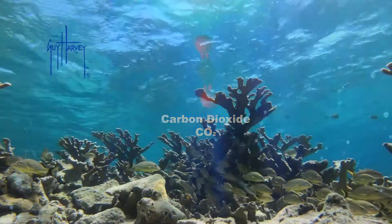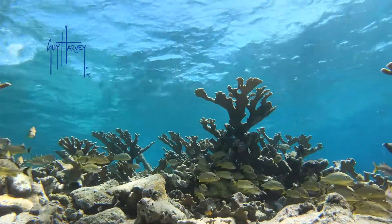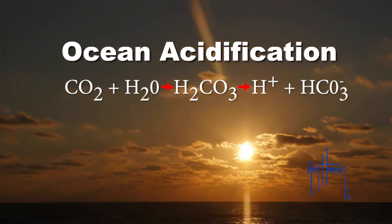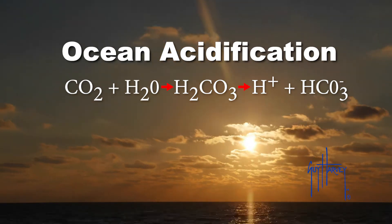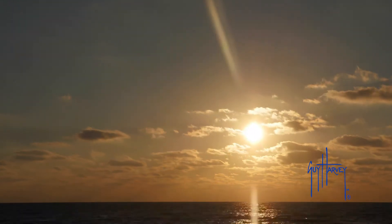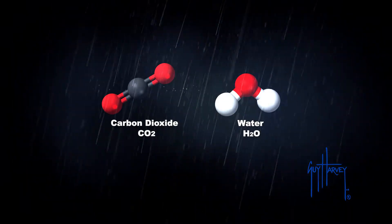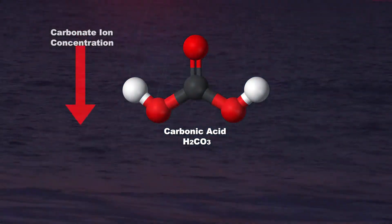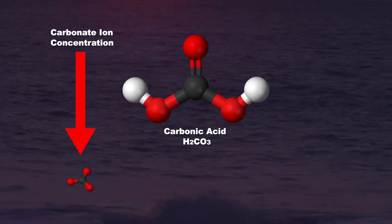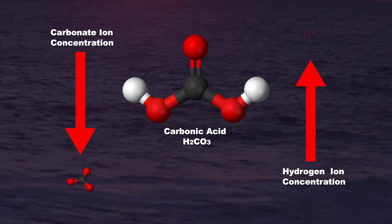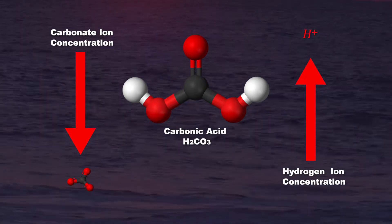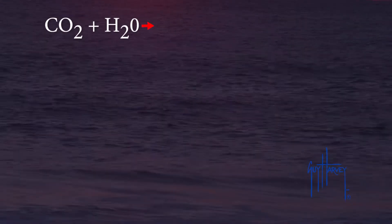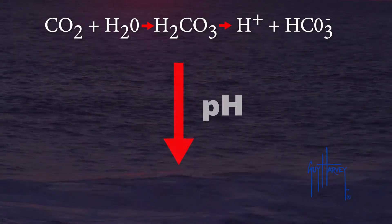This dissolved carbon dioxide is changing the chemistry of the water and dangerously affecting the life within it. The change is called ocean acidification — acidification because the ocean is literally becoming more acidic. Dissolving CO2 into seawater creates carbonic acid, which decreases the carbonate ion concentration and increases the hydrogen ion concentration, ultimately decreasing the pH of the water and making it more acidic.